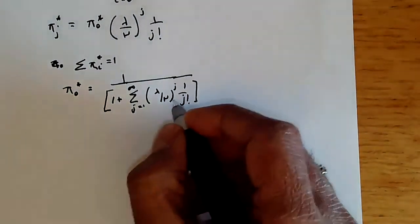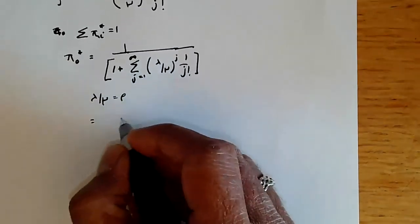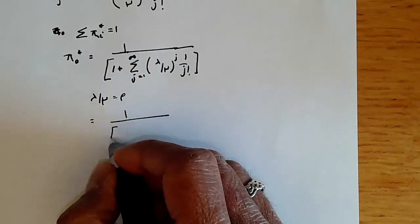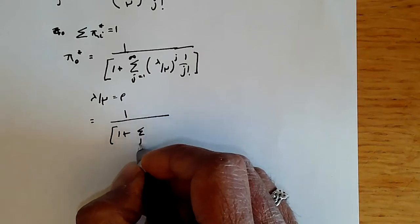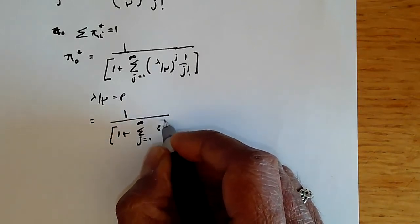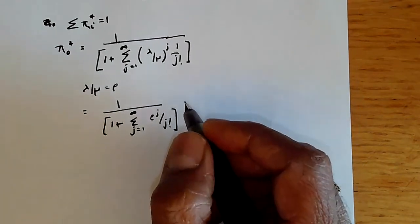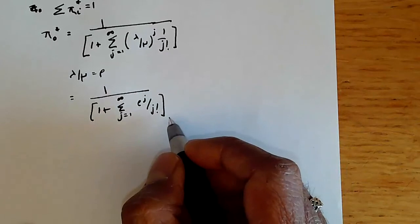Now we remember that lambda by mu equals rho, so this is going to be 1 over 1 plus sigma j equals 1 to infinity, rho to the j by j factorial.